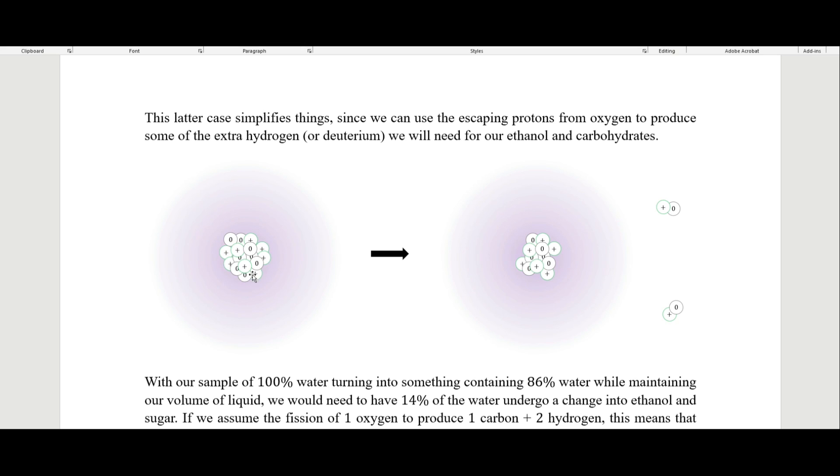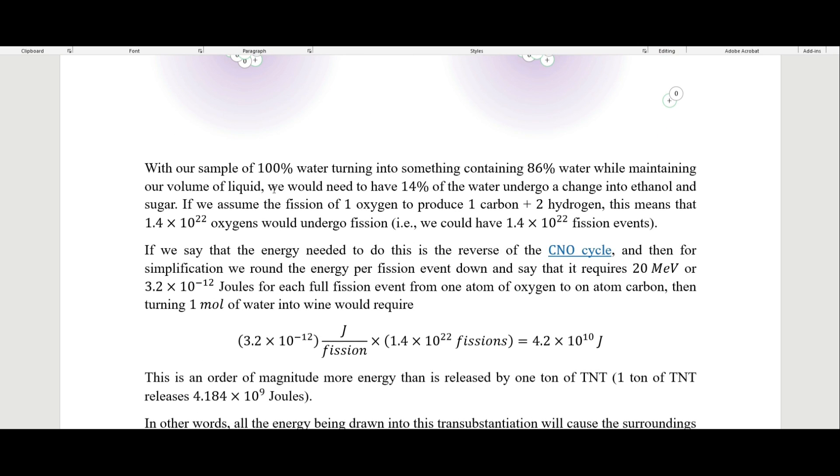This latter case simplifies things, since we can use the escaping protons from oxygen to produce some of the extra hydrogen or deuterium that we need for our ethanol and carbohydrates. With our sample of 100% water turning into 86% water while maintaining our volume of liquid, we would need to have 14% of the water undergo a change. This means that 1.4×10^22 oxygens would undergo fission.